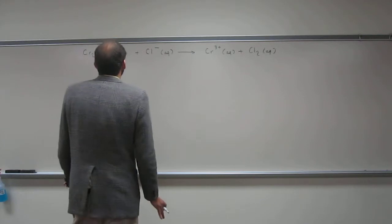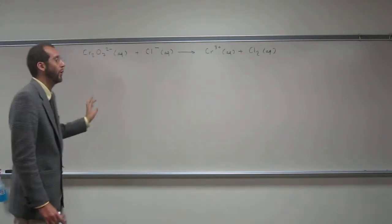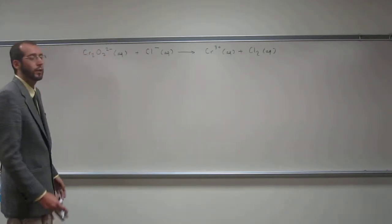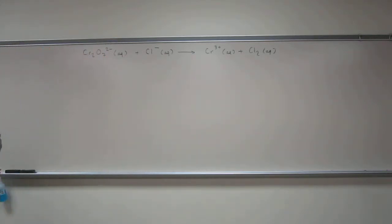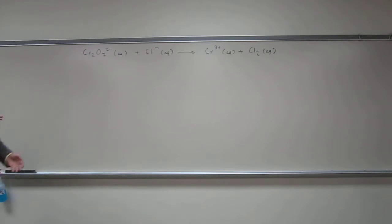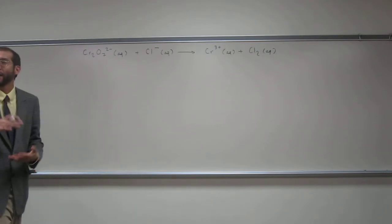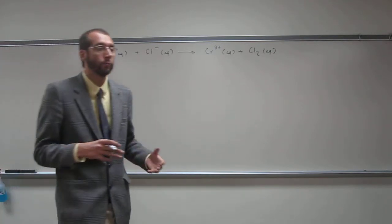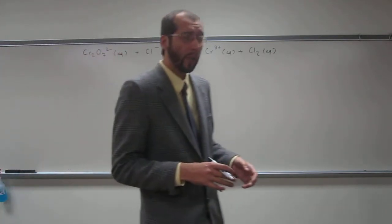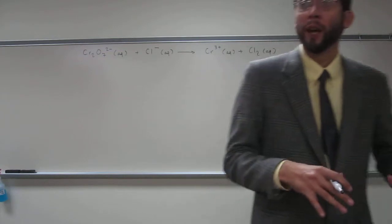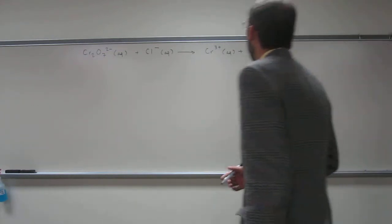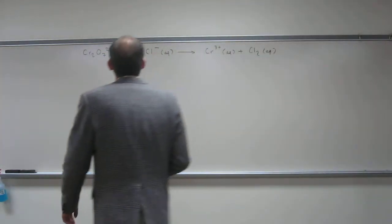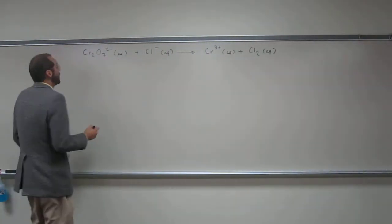These types of redox reactions are kind of a hairy one. Some of them you can balance normally, but some of them you're unable to balance normally. You're going to have to do what we call the half-reaction way of balancing these types of redox reactions.